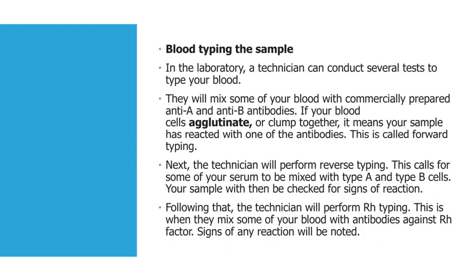Blood typing the sample. In the laboratory, a technician will conduct several tests to type your blood. They will mix some of your blood with commercially prepared anti-A and anti-B antibodies. If your blood cells are agglutinated, or clumped together, it means your sample has reacted with one of the antibodies. This is called forward typing.